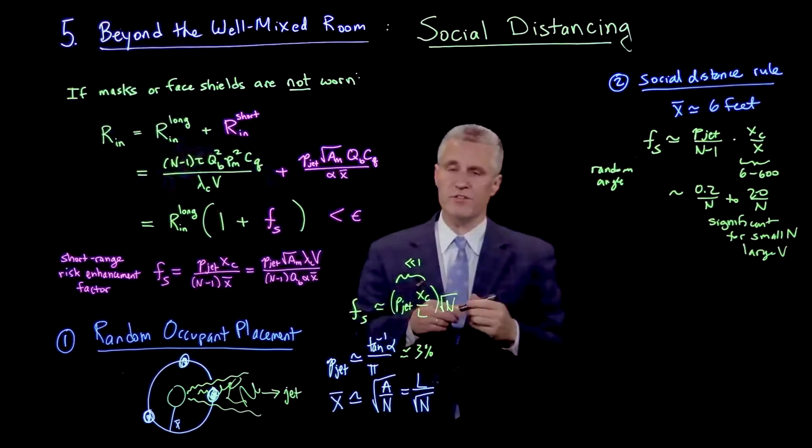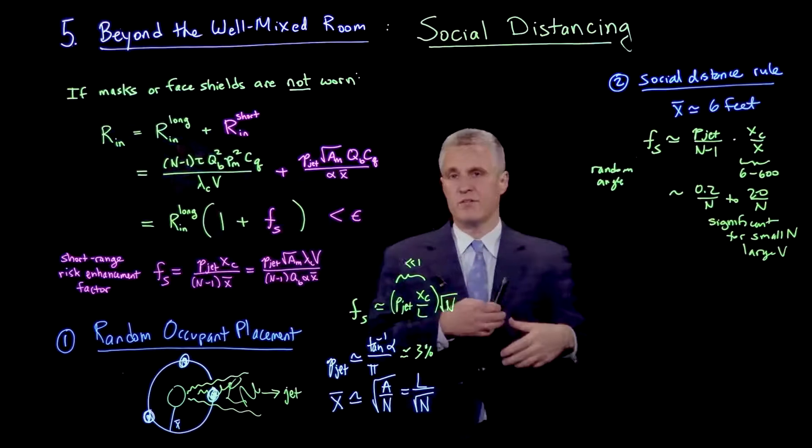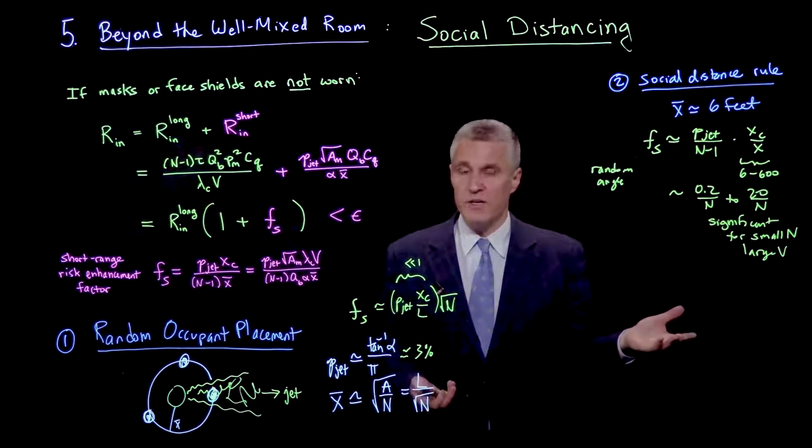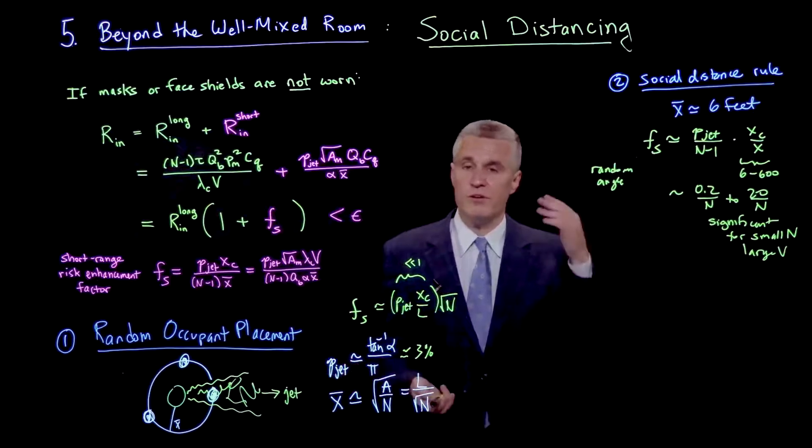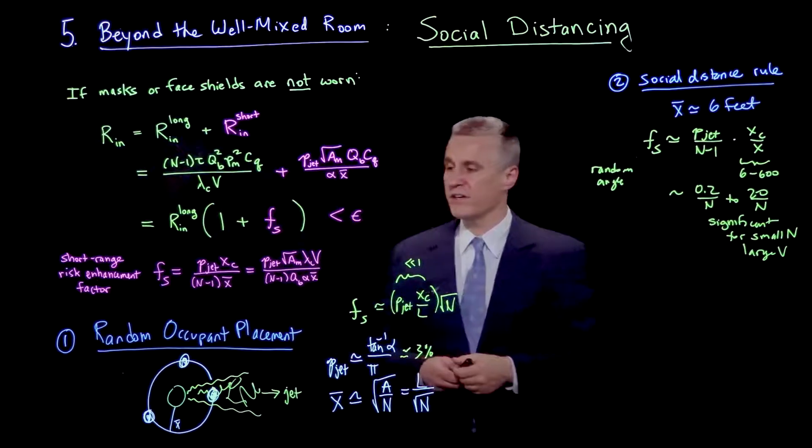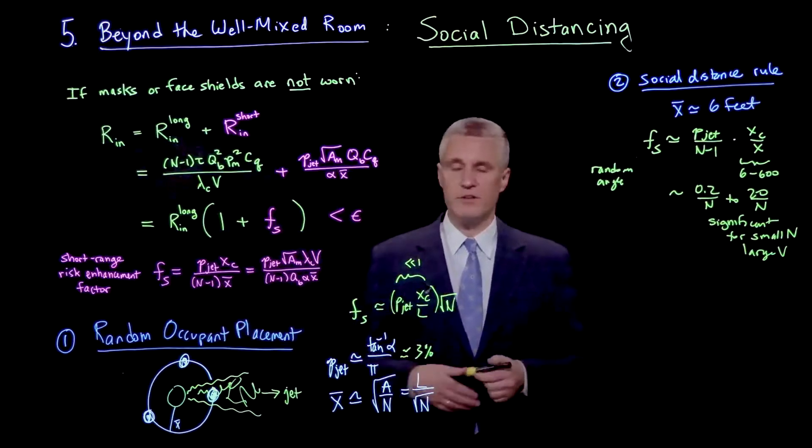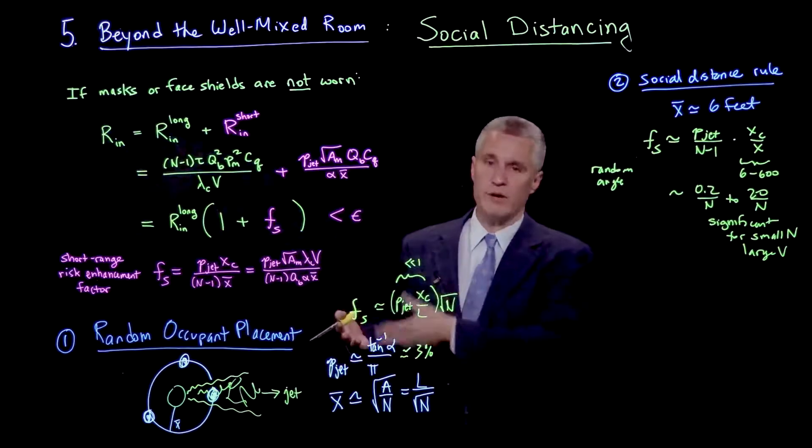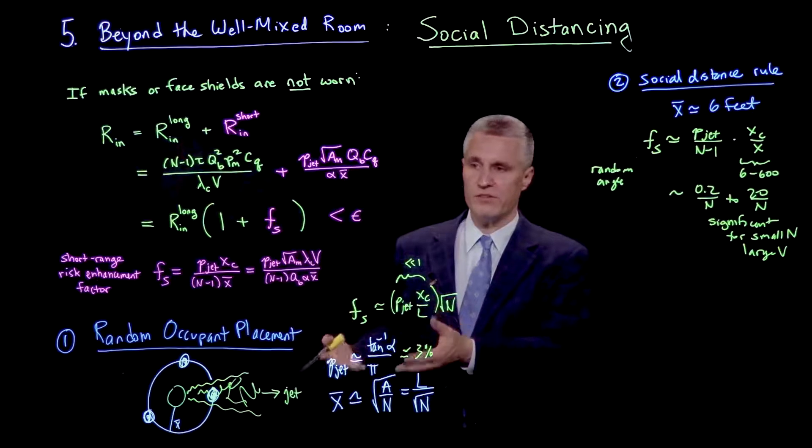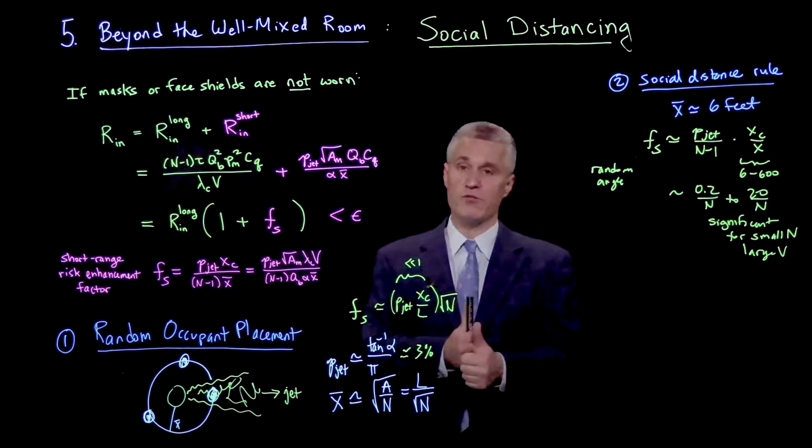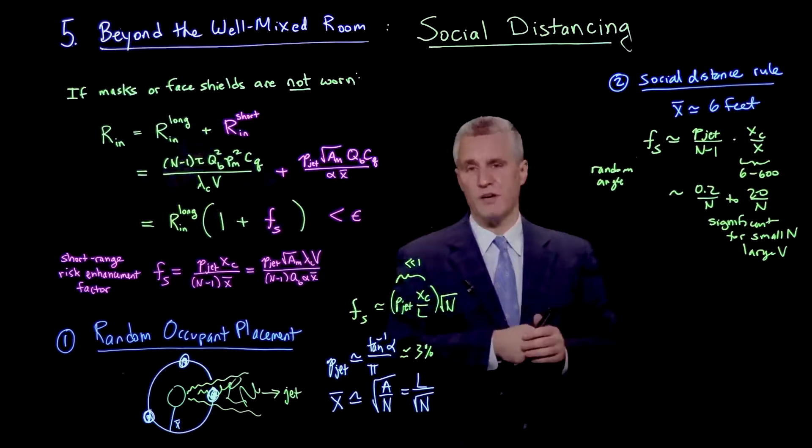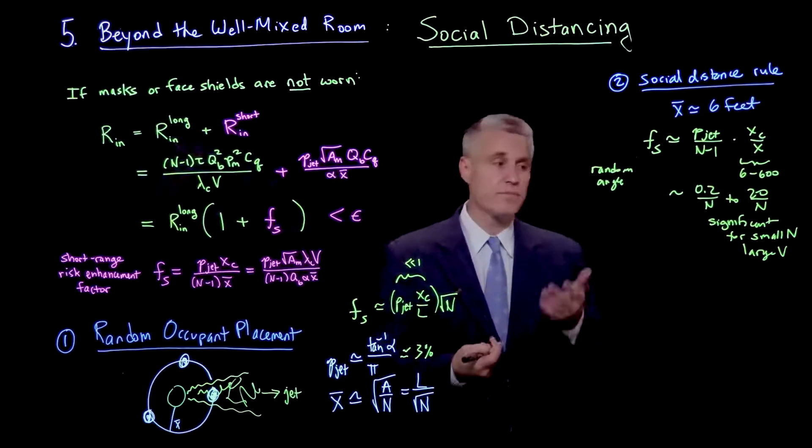A limit that we haven't talked about yet is what if we're outside? What if the v goes to infinity? Well, if v is very large, so effectively it's infinity, what this is telling us is that we have to stop worrying about the long range background well mixed concentration of infectious aerosols, and instead we have to focus on the short range. Just whenever people are coming close to each other, make sure they're not breathing directly on each other for long periods of time. That's the key.